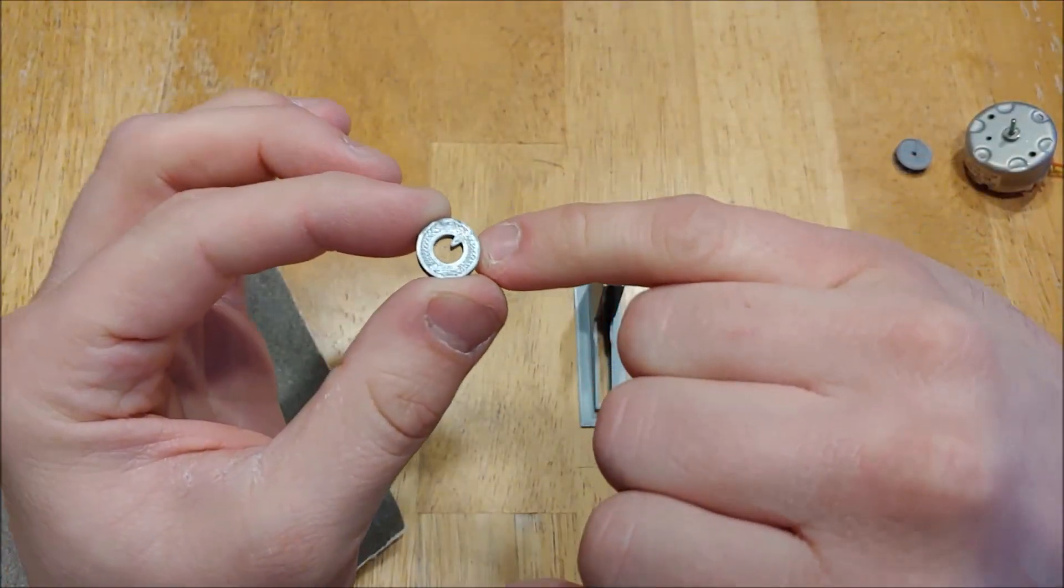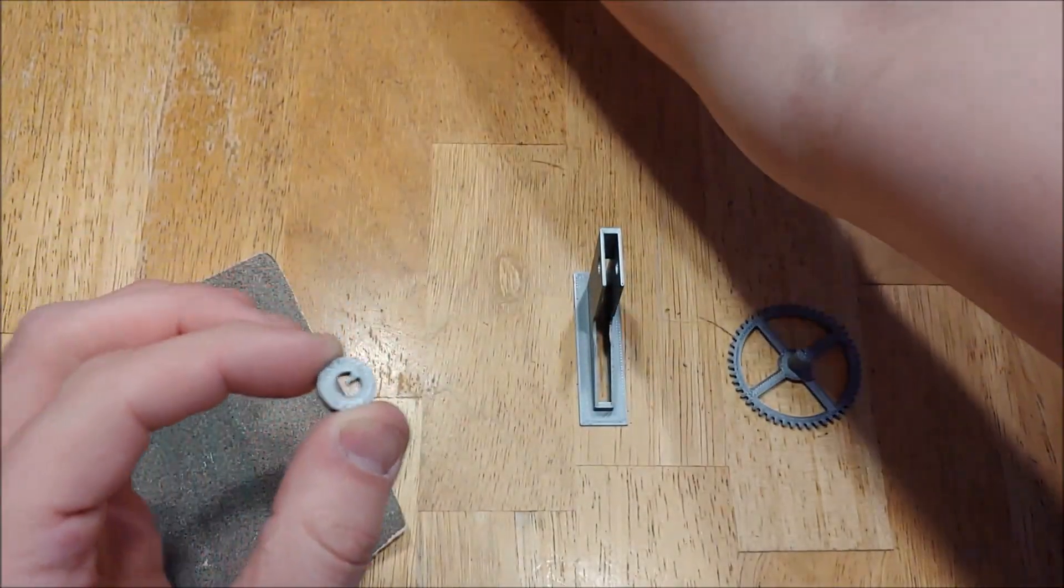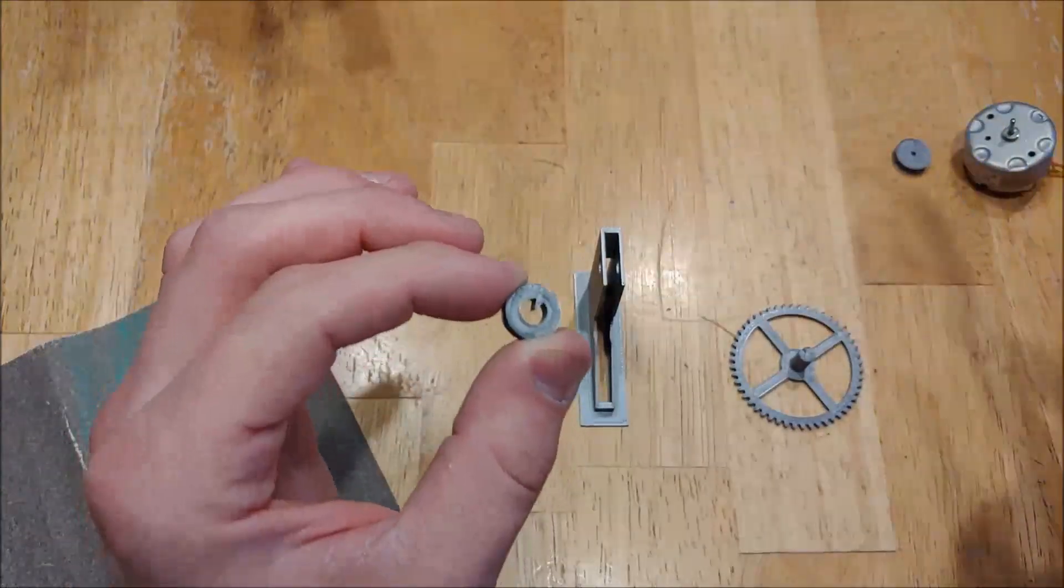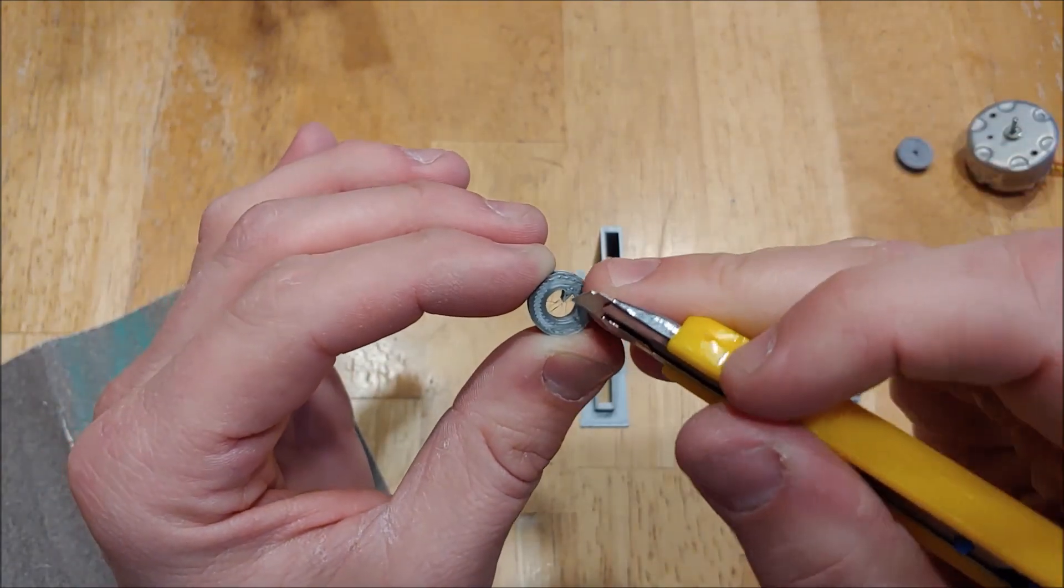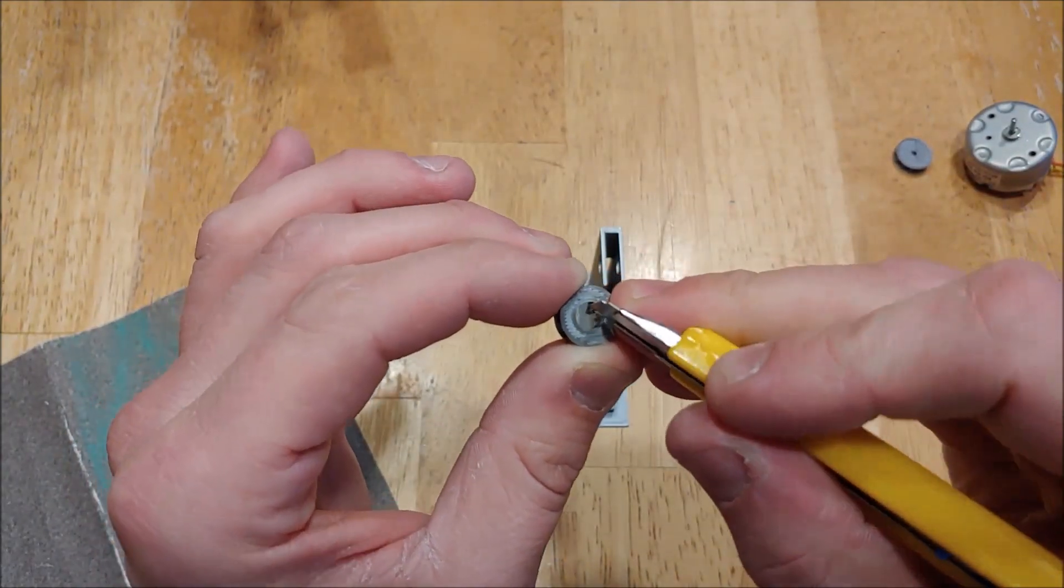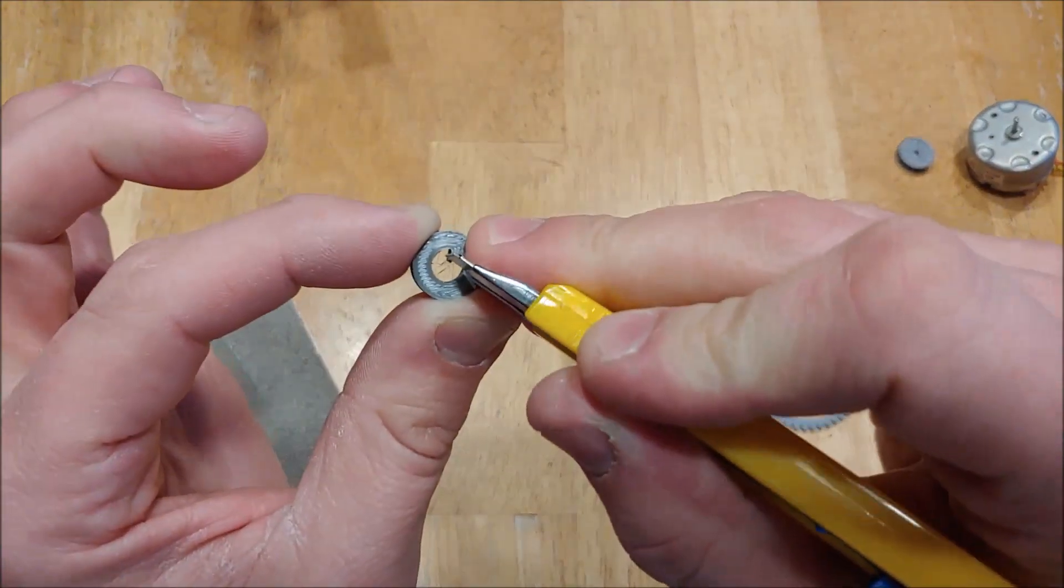Another thing you might want to do is take an exacto knife and cut out a tiny bit of the triangle. It is a little bit too long, but it might fit on yours, but you might want to just shave a little bit of it off there.